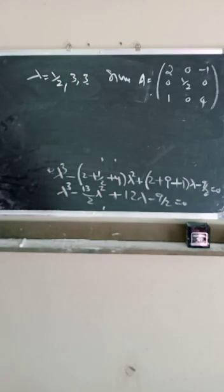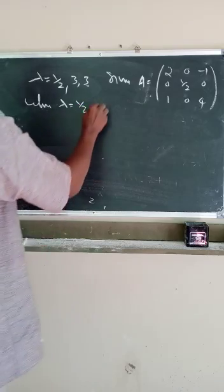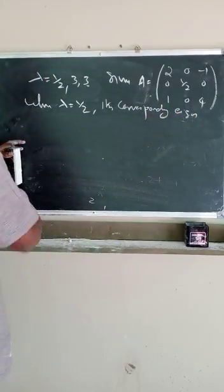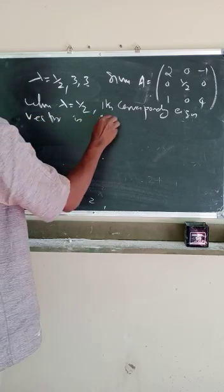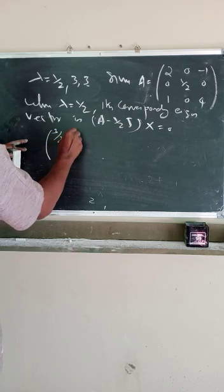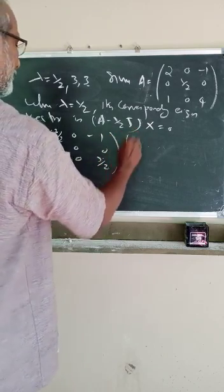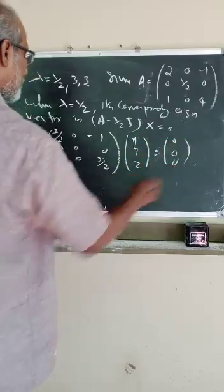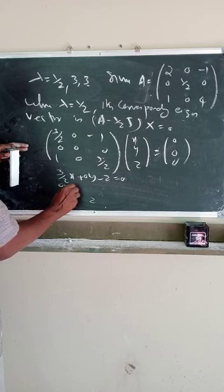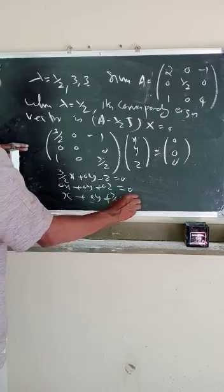The eigenvalues are 1/2, 3, 3. When lambda is equal to 1/2, the corresponding eigenvector is given by (A minus (1/2)I) x equal to 0. That is: (3/2), 0, minus 1, 0, 0, 1, 0, 7/2 times [x, y, z] equals [0, 0, 0]. That is: (3/2)x plus 0y minus z equal to 0; 0x plus 0y plus 0z equal to 0; x plus 0y plus (7/2)z equal to 0.